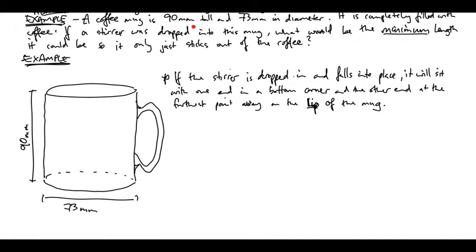You've got a coffee mug that's 90 mils tall, 73 mils across in diameter, completely filled with coffee. If a storer was to be dropped into this mug what would be the minimum length it could be so it only just sticks out of the coffee so you can pick it up again. So the first thing is to draw that diagram.